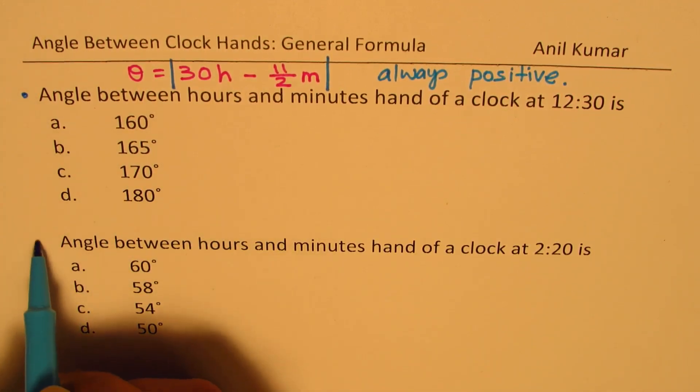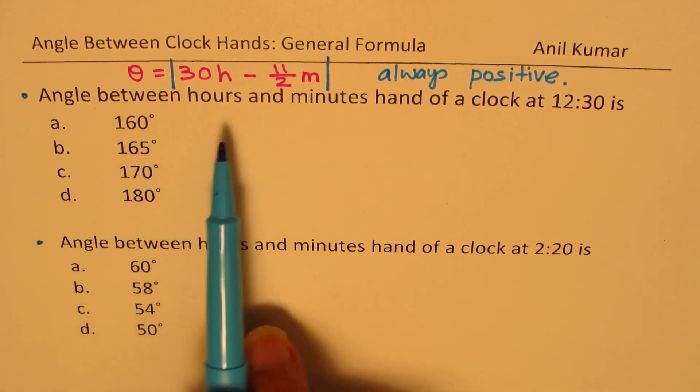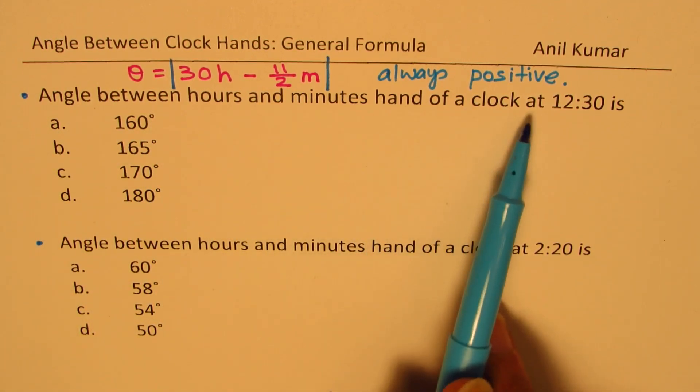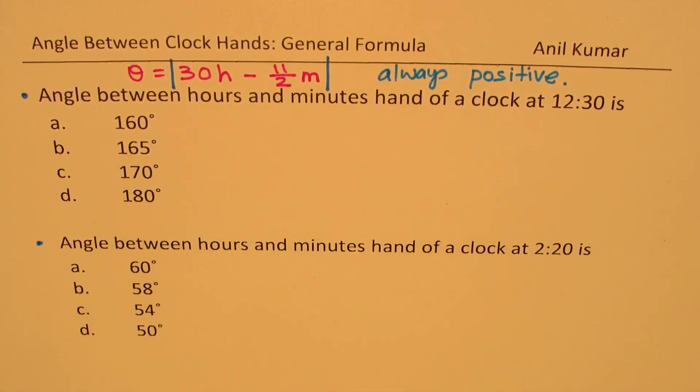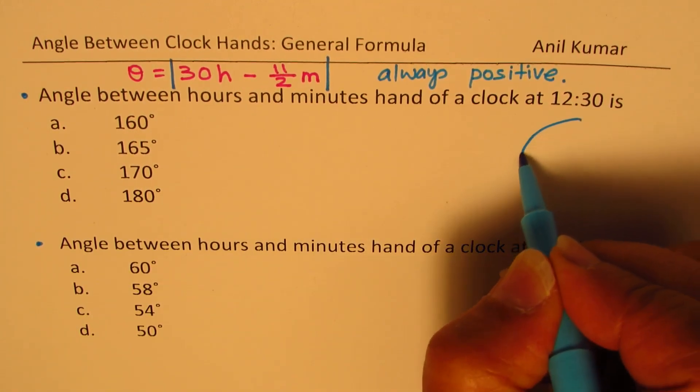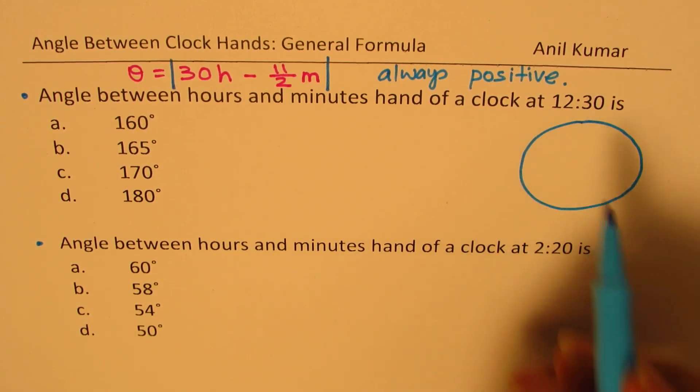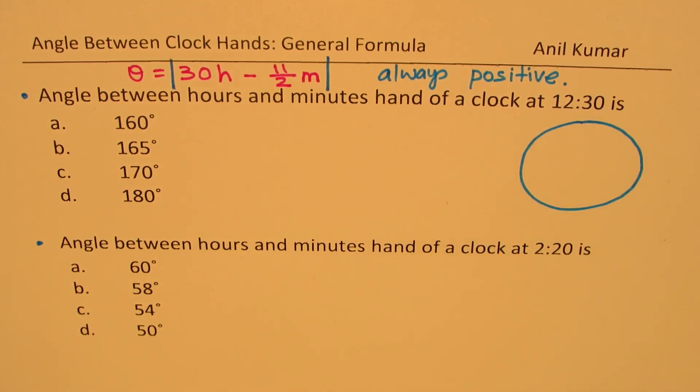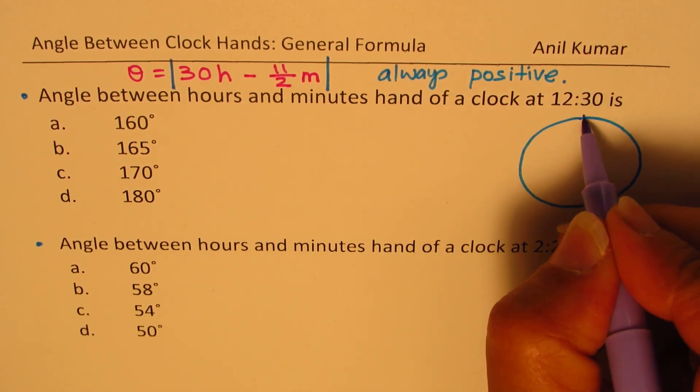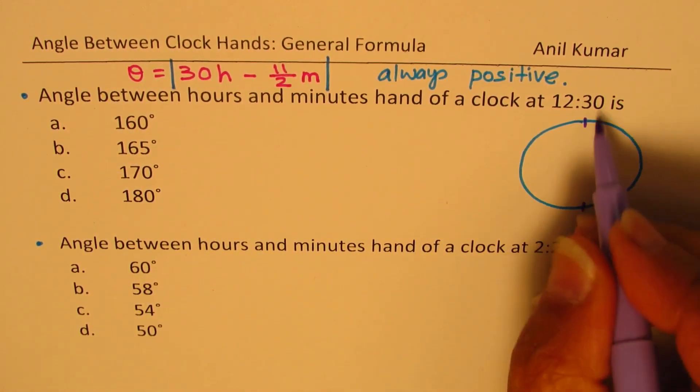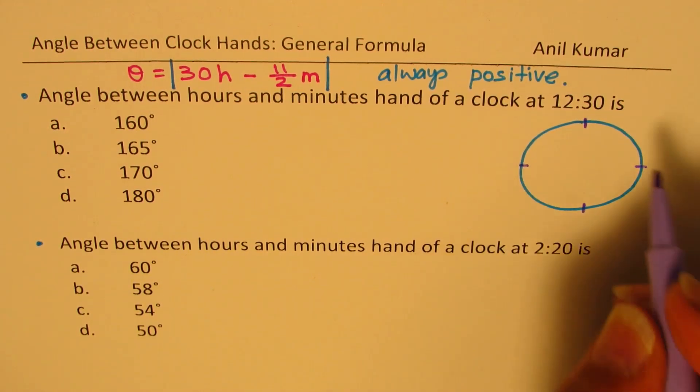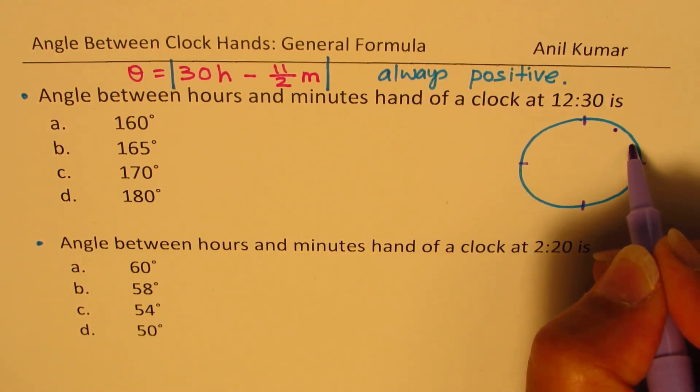So we have two questions here. Angle between hours and minutes hand of a clock at 12:30 is what? So let's look into the clock. Definitely 12:30 it is not 180 degrees, it is much lesser. When we say 12:30 we are talking about this position. Let me just sketch the clock also.